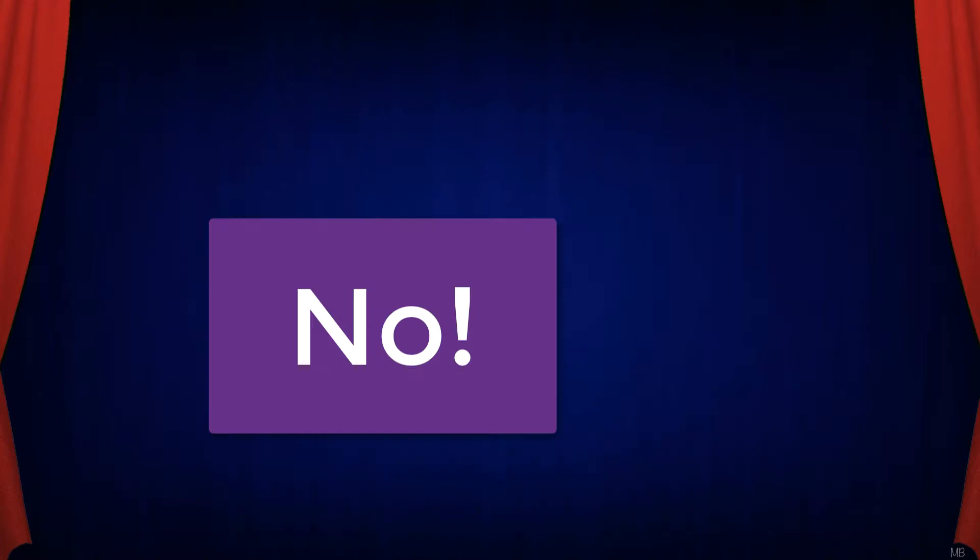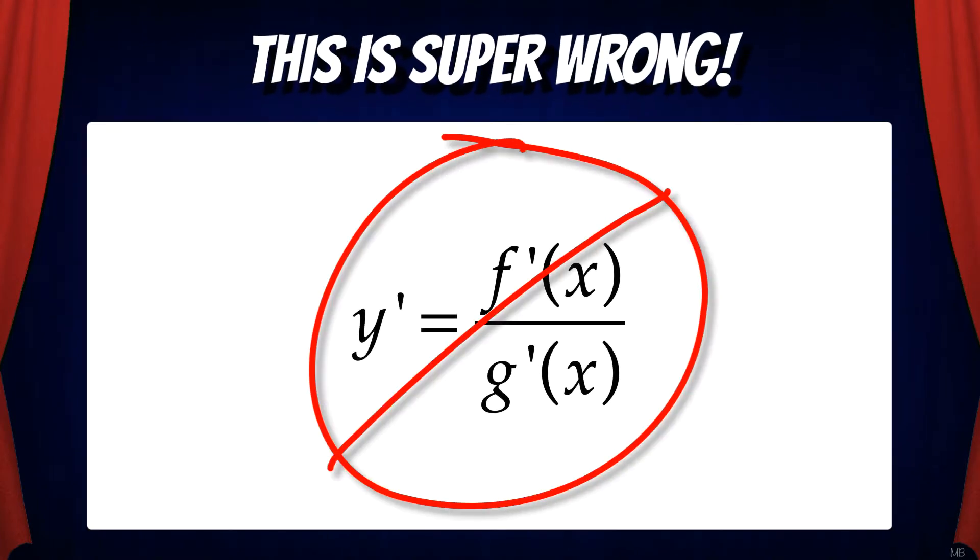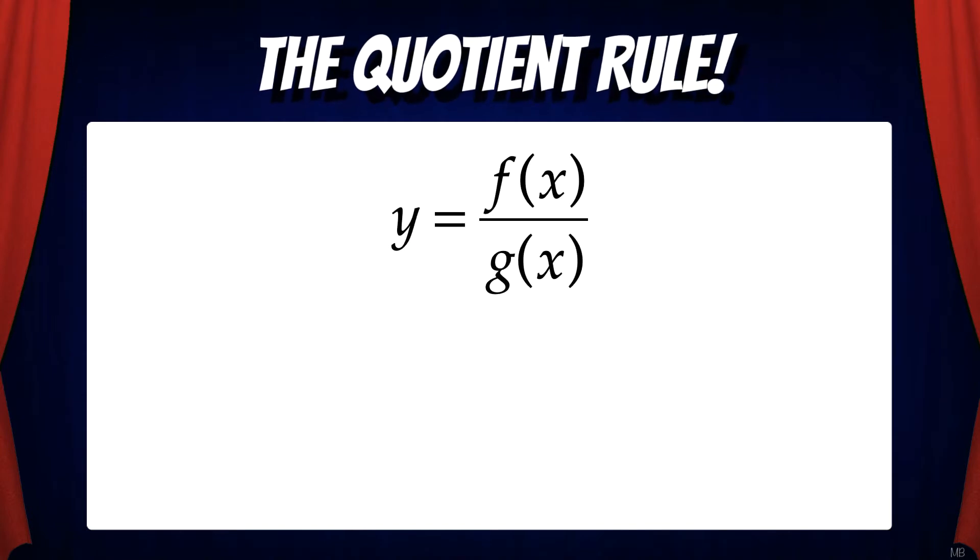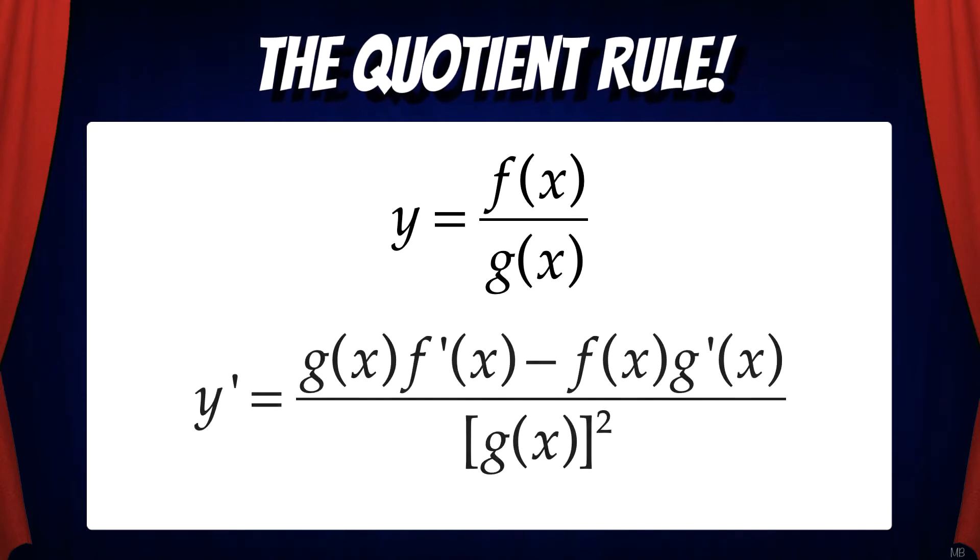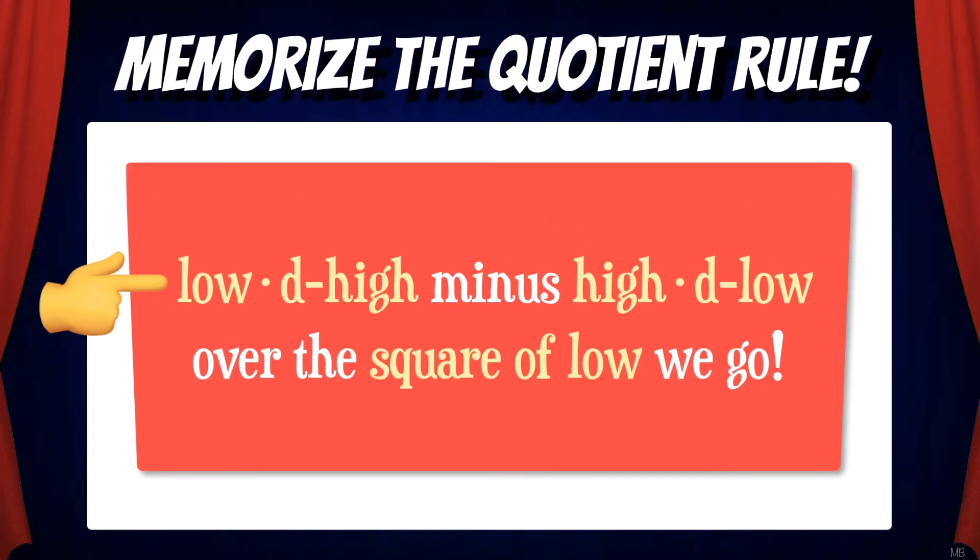No, no, no, no, no! This is super wrong! If y equals f over g, y' equals g f' minus f g' all over g squared. An easy way to remember this is by using this phrase: low d high minus high d low over the square of low we go.